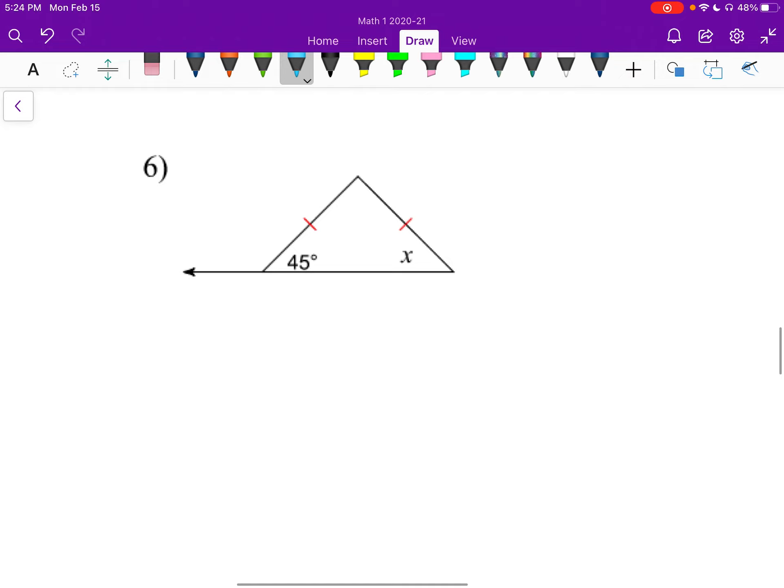Number six. This one's going to be isosceles because it has two equal sides. So I know that the opposite angles, this 45 and this x are congruent. So x is 45 degrees.